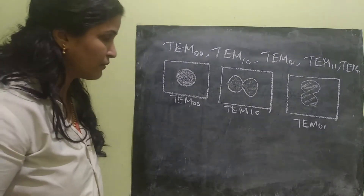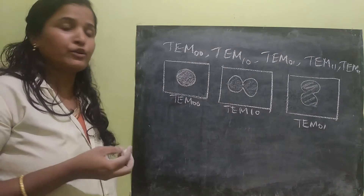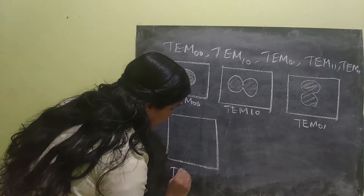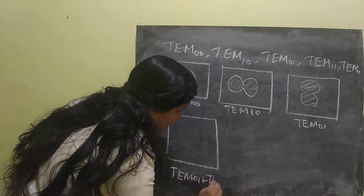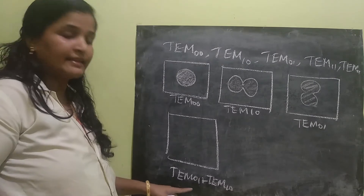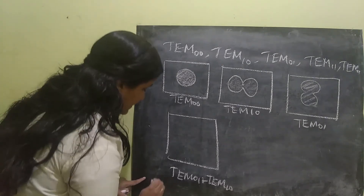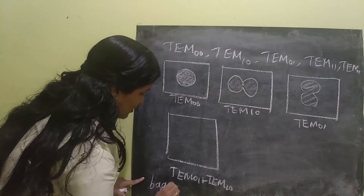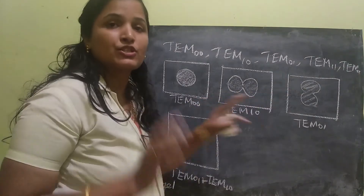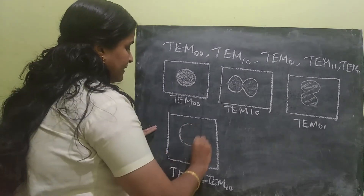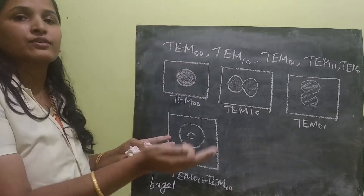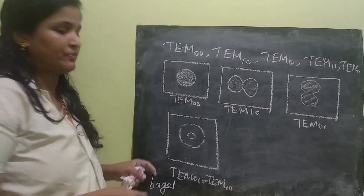There is one more mode which is the combination of TEM01 plus TEM10. The other name for this is called the bagel mode — B-A-G-E-L. If you combine these two, we just get a circle — it's like a hollow cylindrical shaped beam.